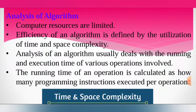How do we do the analysis of an algorithm? Analysis of an algorithm can be done in two ways. One is by using time complexity and another one is by using space complexity. Time complexity means the time required to run or execute the program. Space complexity means the memory space required for the specific program. Using time complexity and space complexity, we can decide whether an algorithm is efficient or inefficient.